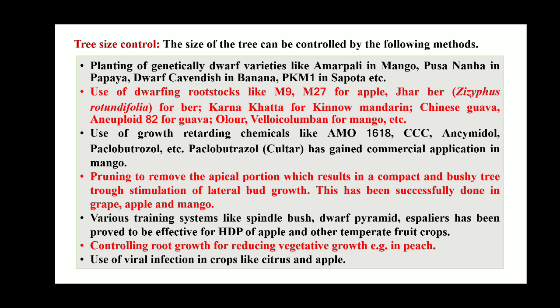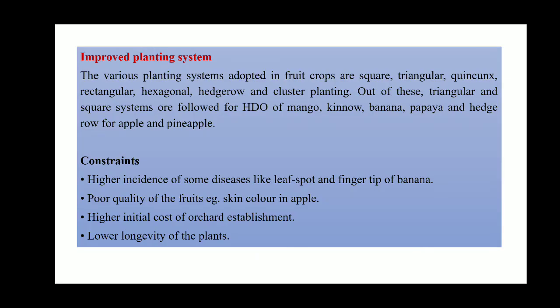By removing branches or sometimes the apical portion of the plant we can have bushiness and finally a dwarf stature of the plant. Various training systems like spindle bush and dwarf pyramid have also proved to be effective for HDP of apple and other temperate fruit crops. Controlling root growth for reducing vegetative growth — for example in peach — and use of viral infection in crops like citrus and apple can also minimize plant size.